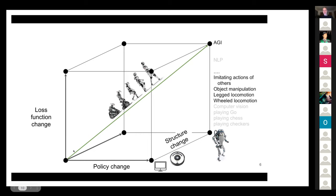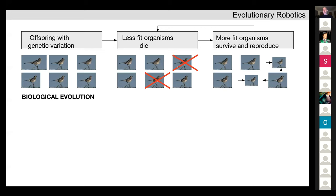So how do we move along this grand diagonal? That's what we try to tackle in evolutionary robotics, and as the name implies, evolutionary robotics uses, at the base level, the idea of biological evolution.